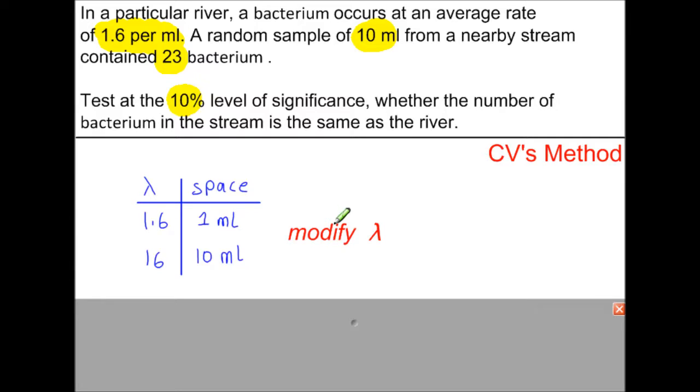So to modify lambda, when lambda is 1.6 we have 1 milliliter. So for 10 milliliters, you multiply by 10 on this side, you multiply by 10 on this side. Then lambda is 16. This is the value that we're going to use for our H0 and H1.